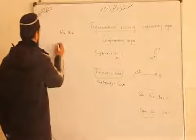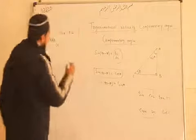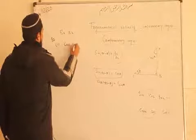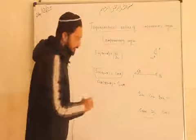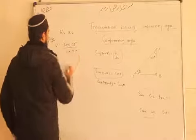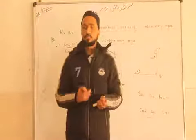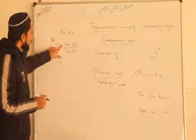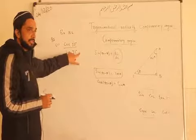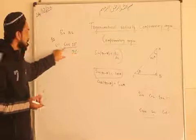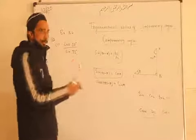Question number one, part first: cos 18 degree divided by sin 72 degree. See that cos and sine are complements of each other. In this type of question, there is a short trick. If you see that these are complementary angles and the sum of their angles is 90 degrees, so they will cancel out and the value will be 1.